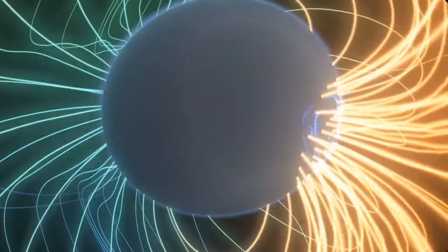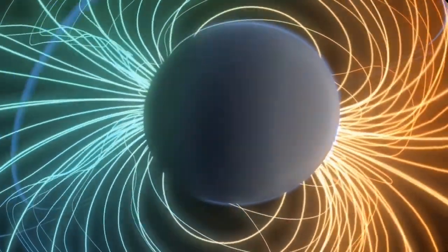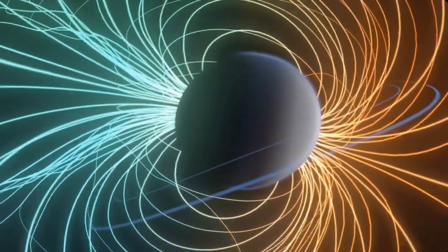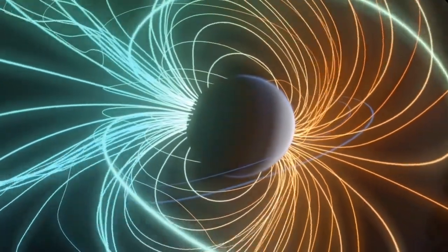Neptune's magnetic field is also strongly tilted, resulting in a lopsided magnetic shield with its poles occasionally exposed to the solar blast.